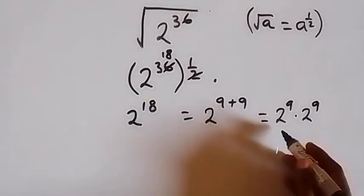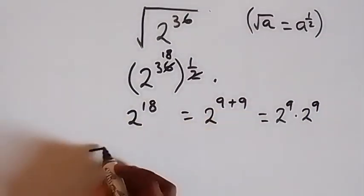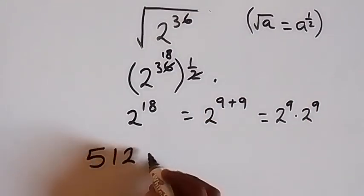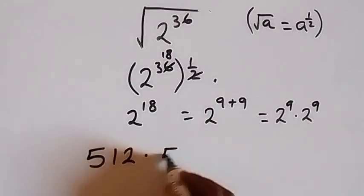2 raised to power 9 is 512. So we have 512 times 512.